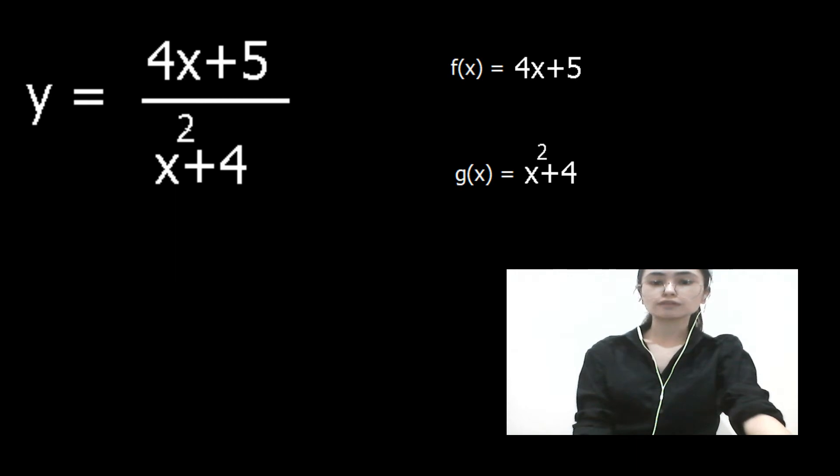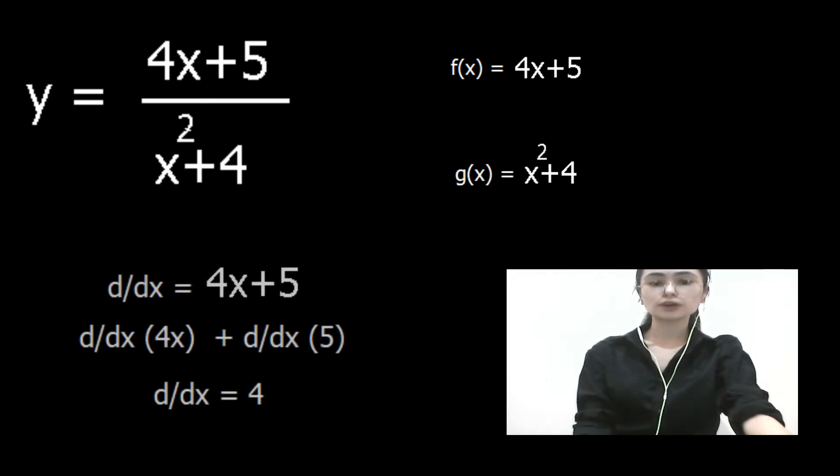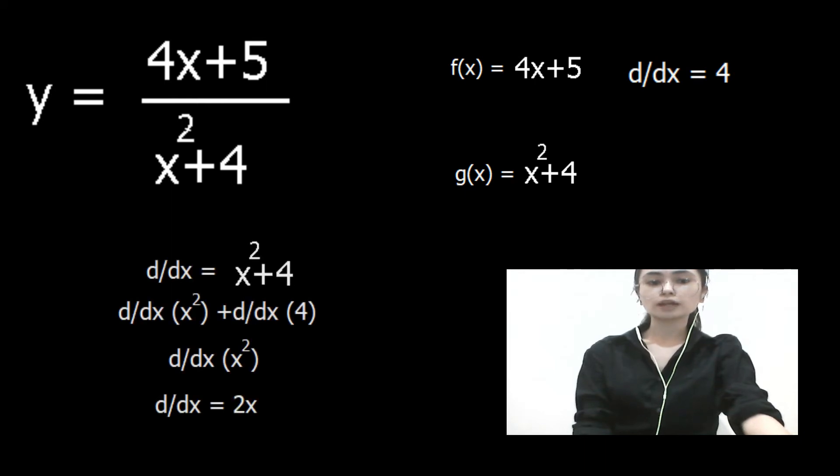If we try to get the derivative of this, we must use the power rule. Thus, since it's already 1 as the exponent of 4x, we must omit the x in the 4x and also include the constant. Therefore, the derivative of f of x is 4. In the denominator, we should also apply the power rule. x squared has the exponent of 2. Therefore, we must transpose the 2 to the front of x and subtract 1 from the exponent, making it 2x. And don't forget to omit the constant. Therefore, the derivative of x squared plus 4 is 2x.